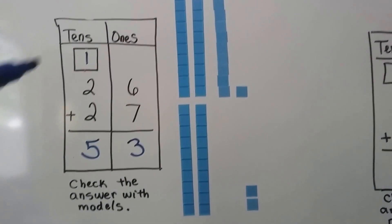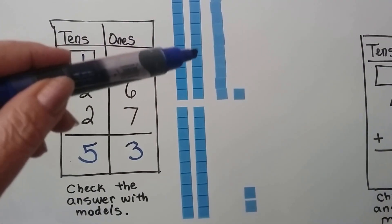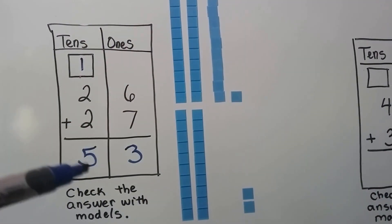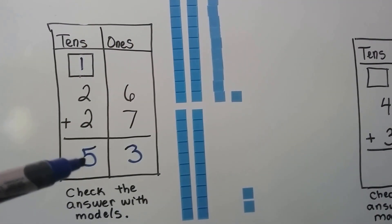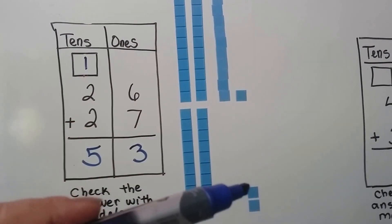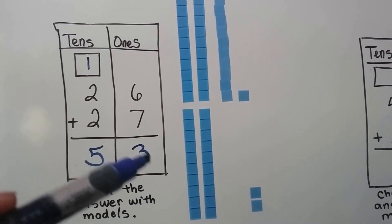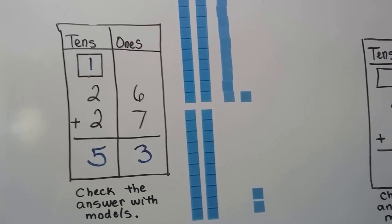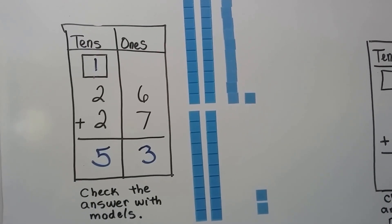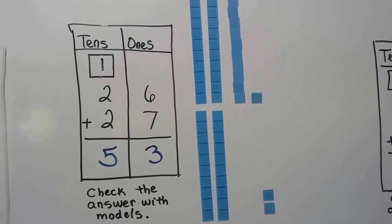Now we can count our tens: 1, 2, 3, 4, 5. Yes, we have 5. And 1, 2, 3 ones left over. So we did it right. It checked out. It's 53.